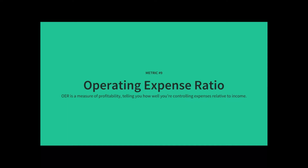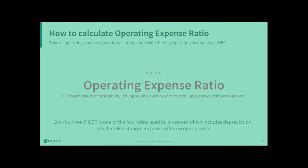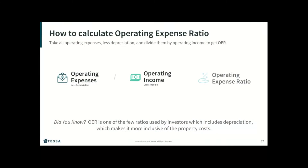It's one of the few ratios used by investors that includes depreciation, which makes it more inclusive of all your property costs. A lower OER means that you've minimized expenses relative to revenue. If your OER has been rising over time, it could indicate some expense issues.